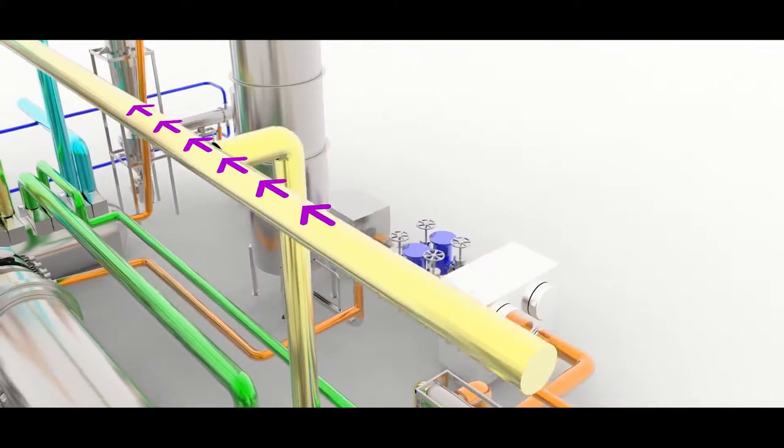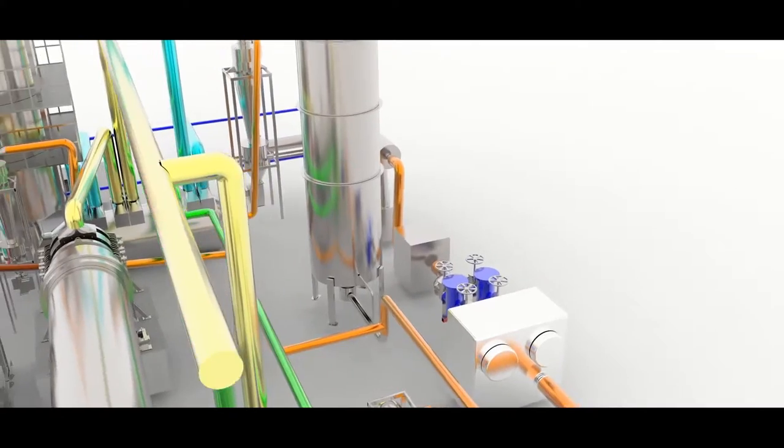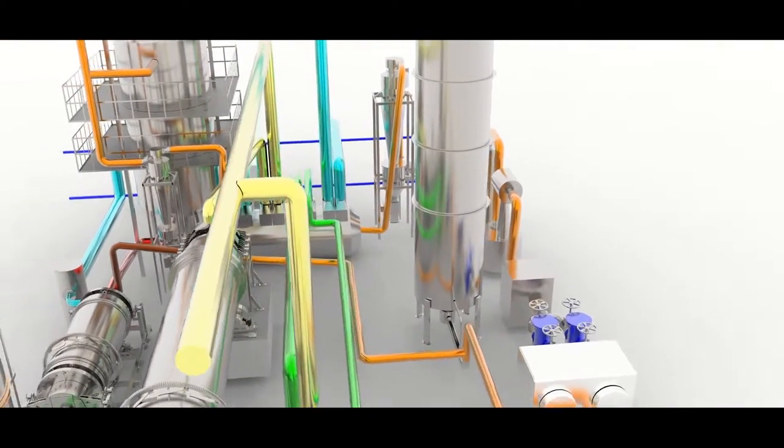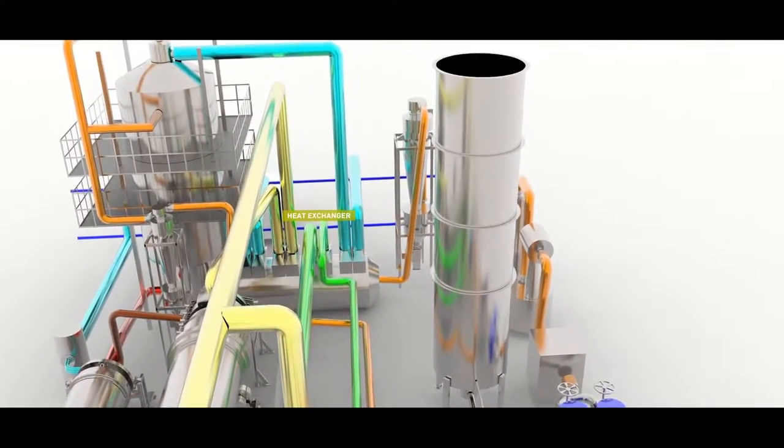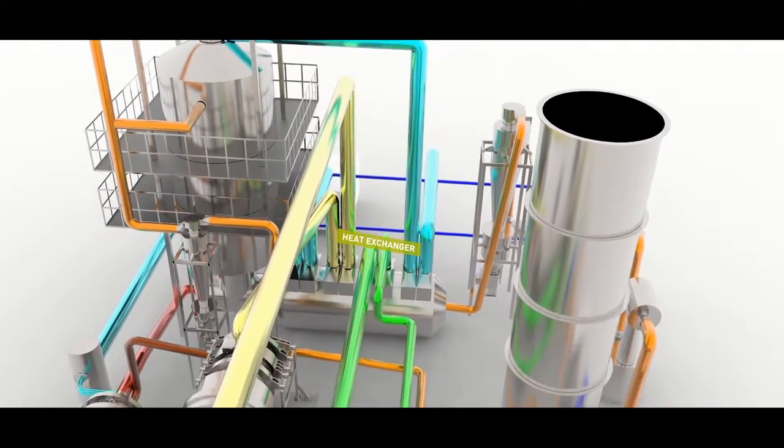To provide the required energy to the process, the exhaust gases of the cogeneration engine are used. First, these gases are brought to a heat exchanger, where its temperature is raised.